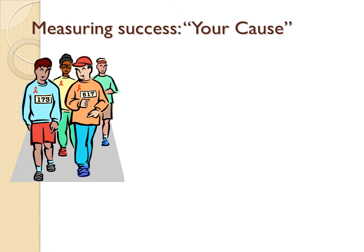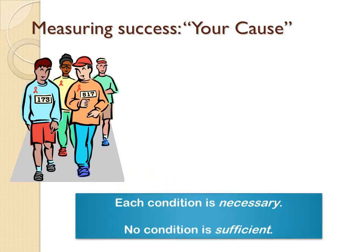The first thing we have to look at are three conditions that must be met in order to make a case for cause and effect. These conditions are each necessary — in other words, if you're missing one of them, you're not able to demonstrate cause and effect. But no one of these conditions is sufficient, meaning that if you succeed in demonstrating one but cannot demonstrate the others, you have not demonstrated cause and effect no matter how strongly you demonstrate that one condition.